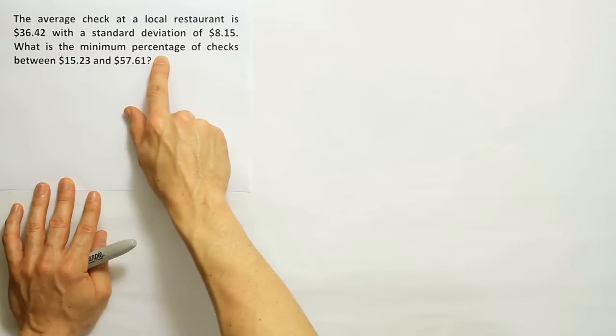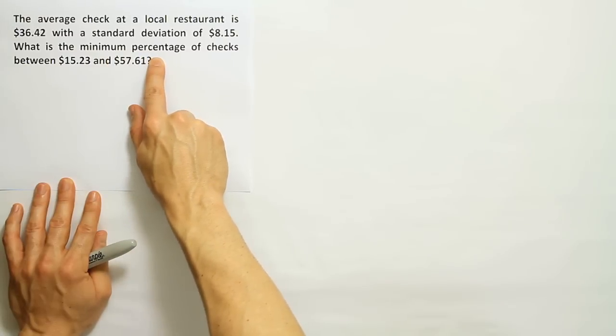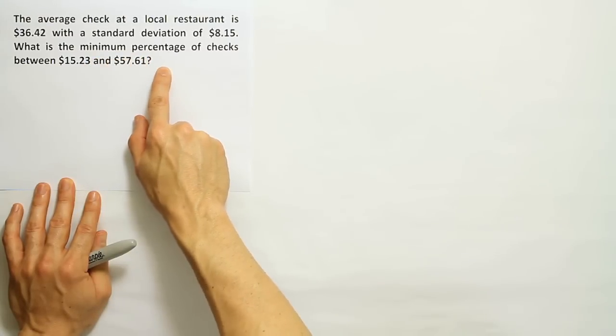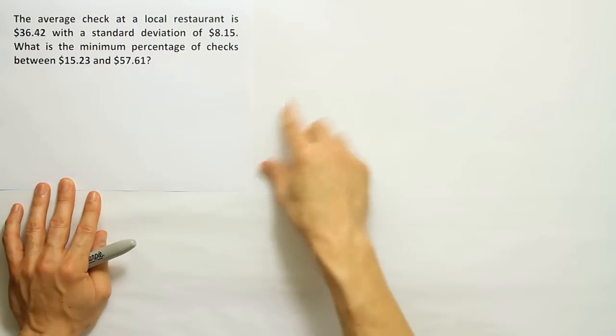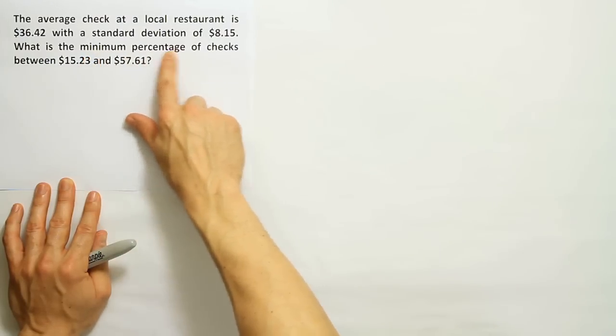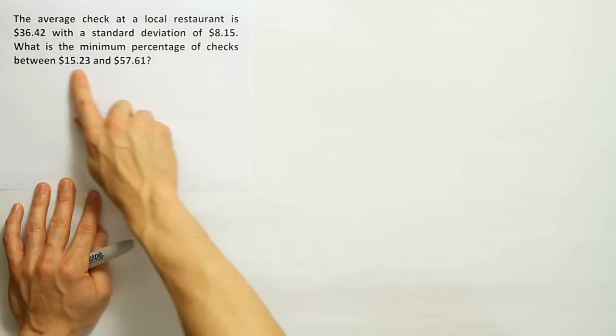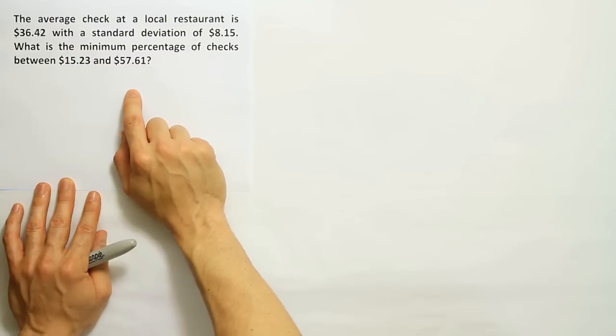The other thing about it is that it says minimum percentage. Minimum percentage is the phrase that Chebyshev's theorem uses because it gives you at least X percent is in the interval. So that minimum percentage idea conveys to me that it might be Chebyshev's theorem.